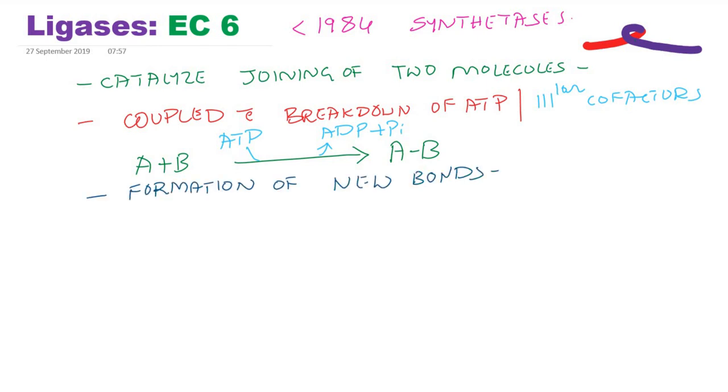Depending upon the new bond formation they are subclassified - that is the second digit of enzyme nomenclature. These new bonds could be carbon-oxygen or carbon-sulfur or carbon-nitrogen or carbon-carbon or even carbon-phosphoric acid. Depending upon these new bond formations the second digit is determined.